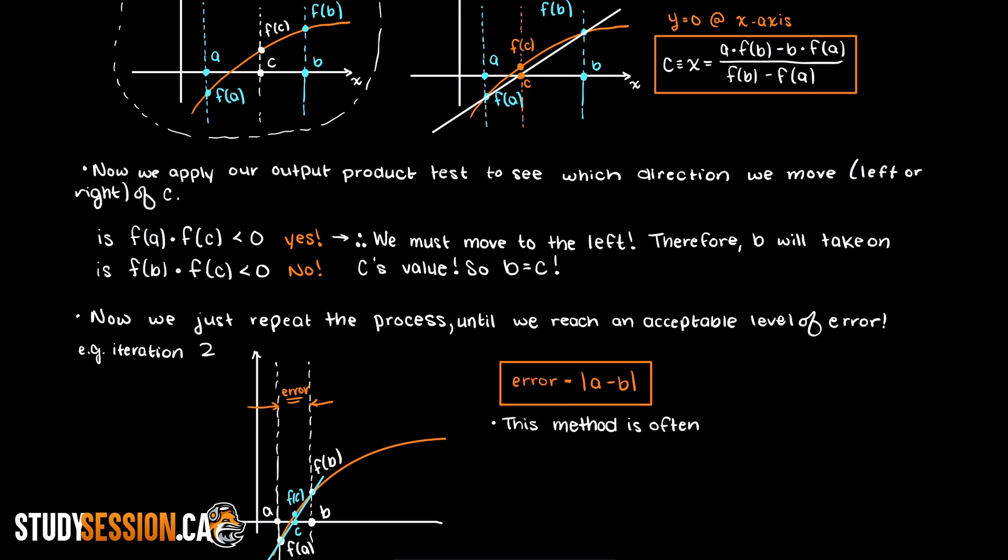Typically the false position method will allow you to find your roots quicker than the conservative bisection method. The only drawback for this method is the same for all closed numerical methods. That is that we need to ensure our function only has a single root within a given region of interest and we cannot have more than one root in that area of interest.